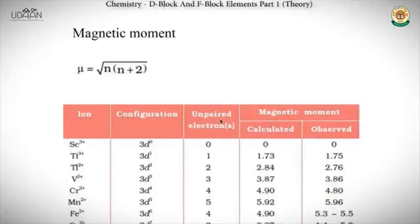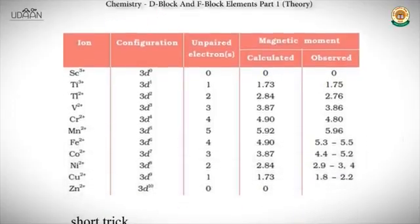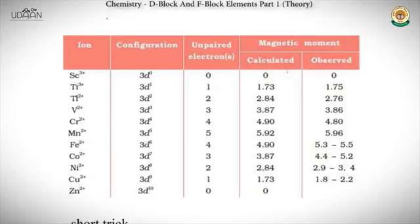Now let's see the magnetic moment trend in D and F block elements. The formula for magnetic moment is μ = √(n(n+2)) Bohr magnetons, where n is the number of unpaired electrons. For Sc³⁺ the configuration is 3d⁰, so unpaired electrons = 0, giving magnetic moment = 0.